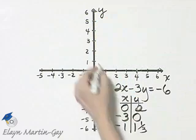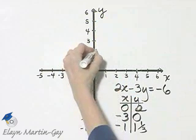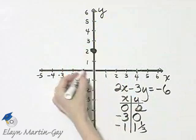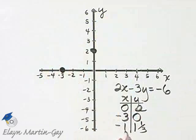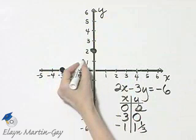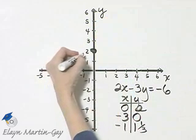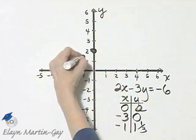So that's 0, 2, negative 3, 0. Start here, go 3 to the left, 0 up or down, and negative 1, 1 and 1 third. That's 1 to the left, 1 and 1 third up.